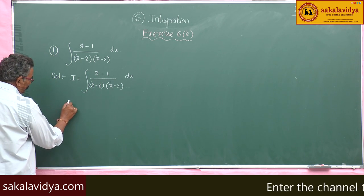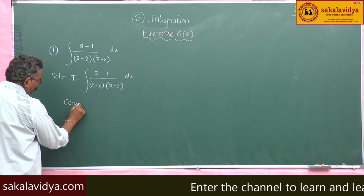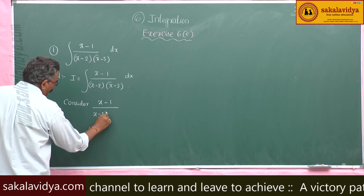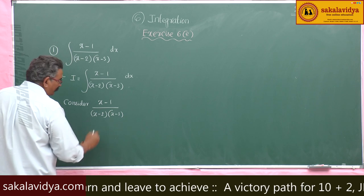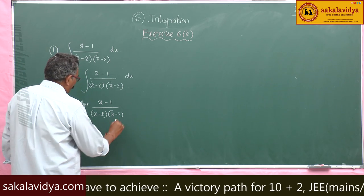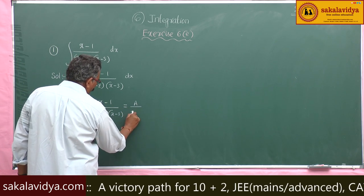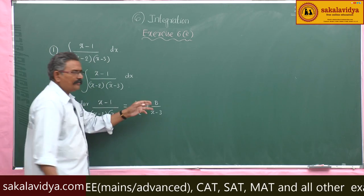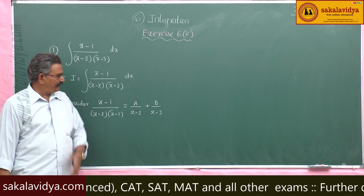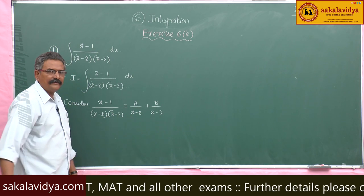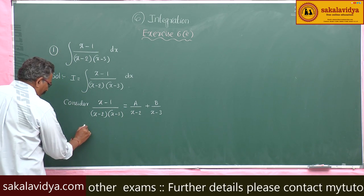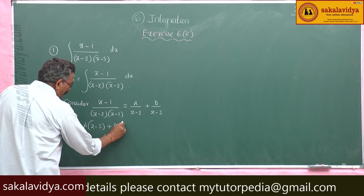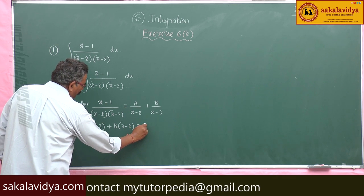Consider x minus 1 by x minus 2 into x minus 3 is equal to A by x minus 2 plus B by x minus 3, where A and B are constants to be evaluated. Multiply both sides with x minus 2 into x minus 3; you get A into x minus 3 plus B into x minus 2 is equal to x minus 1.